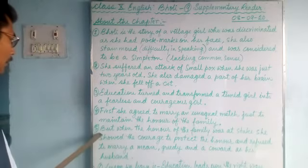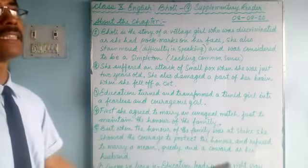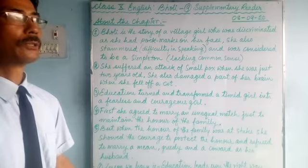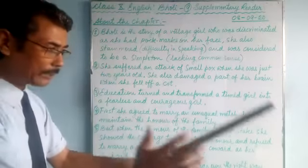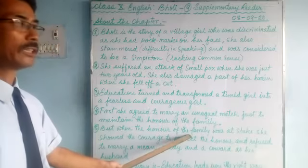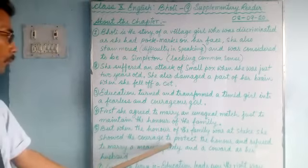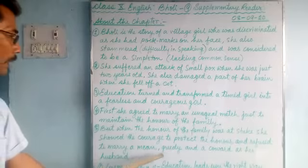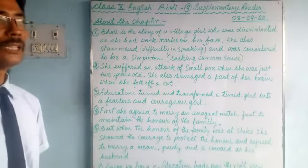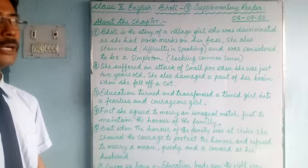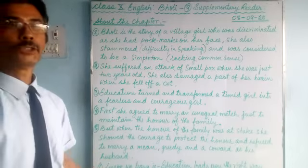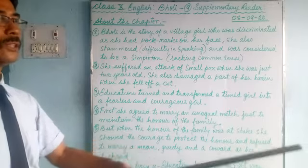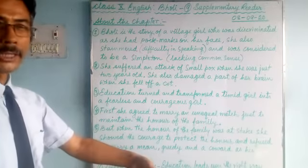But when the honor of the family was at stake — meaning in danger — when her father put his turban at the feet of the groom, she thought this was too much. She showed the courage to protect the family's honor and refused to marry a mean, greedy, and cowardly man. She refused in front of all the people, speaking in such a way that everyone was surprised — she who used to stammer was now speaking so beautifully and courageously.